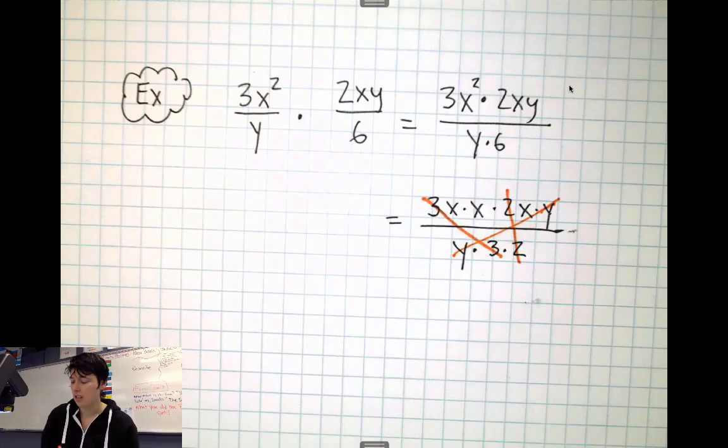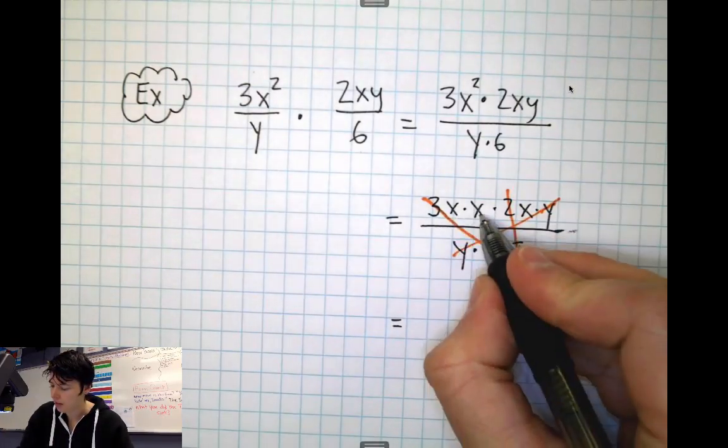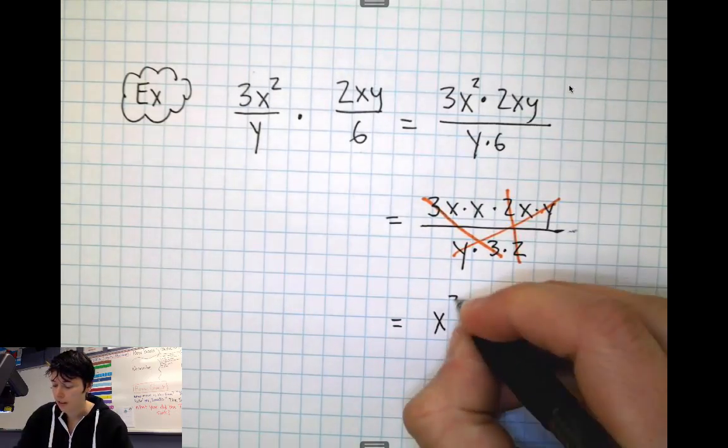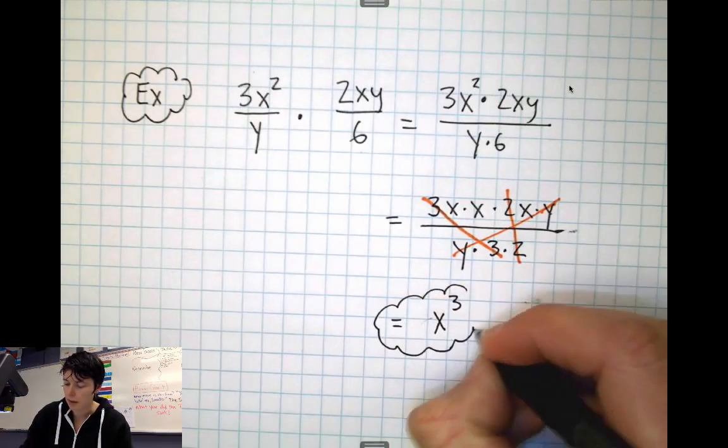And I see a set of y's that are kind of far across from each other. So it looks like the entire denominator is gone, and on top I'm left with x times x times x, so I see x³. That's all I'm left with. So this simplifies down to x³.